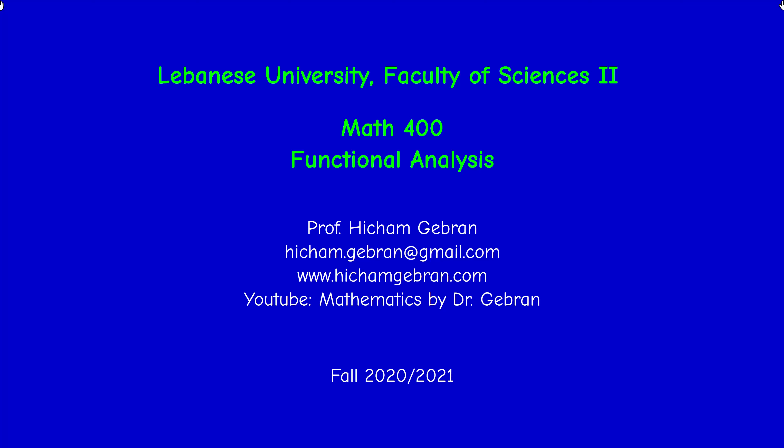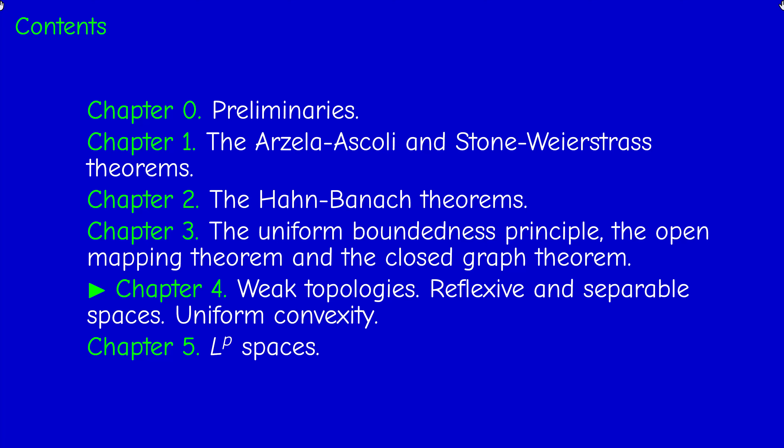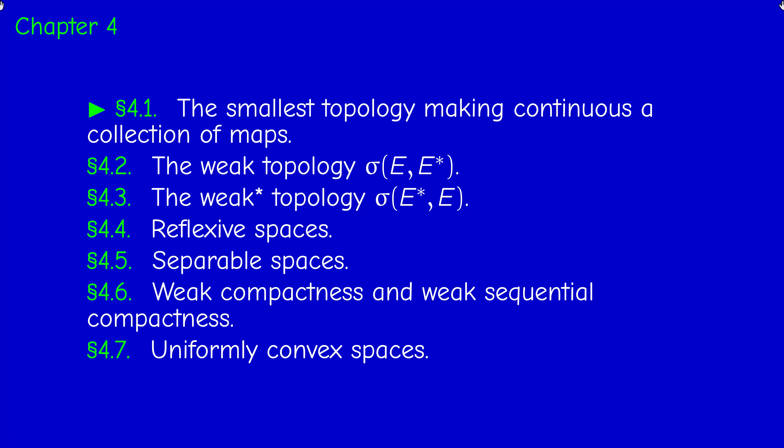Welcome back. Now we move to the most difficult and lengthy chapter of this course. It's about weak topologies, reflexive and separable spaces, and uniformly convex spaces. In this chapter we will synthesize everything we learned so far in this course — this is why it's the most difficult. There will be seven sections in this chapter.